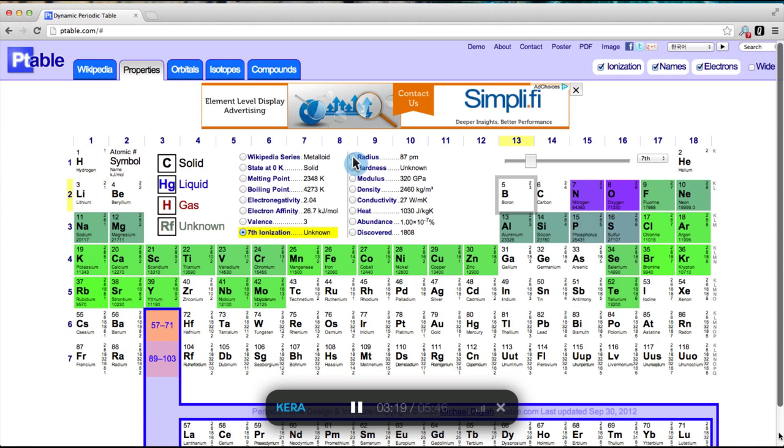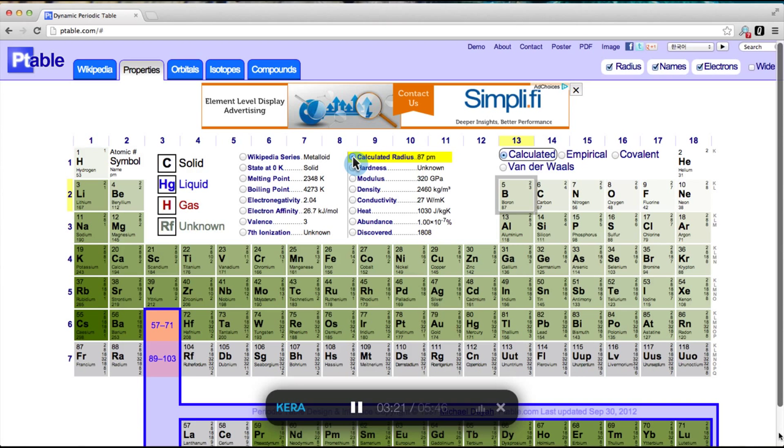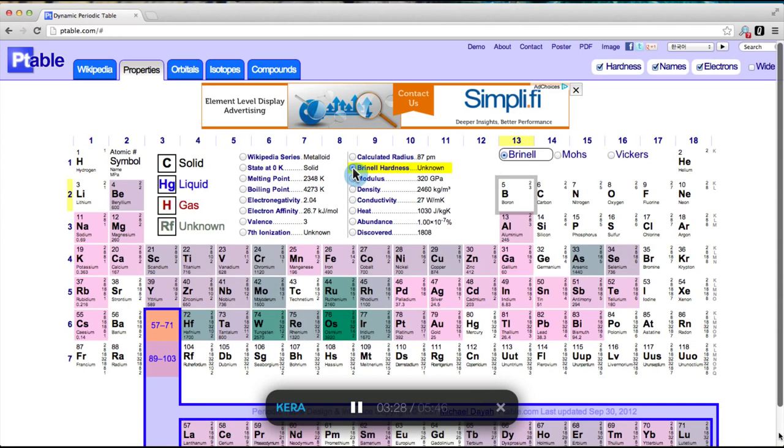The next half-dozen properties have subsets that can be chosen in the slider area. We can easily see that atomic radius increases with period, but decreases with group. I'll just click through the remainder of the properties.